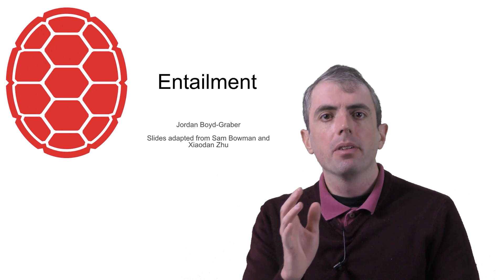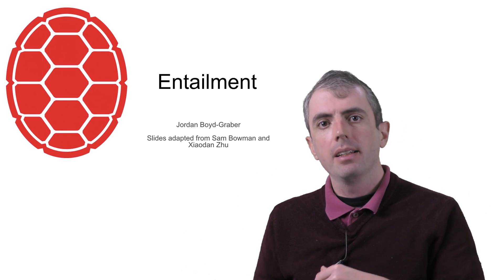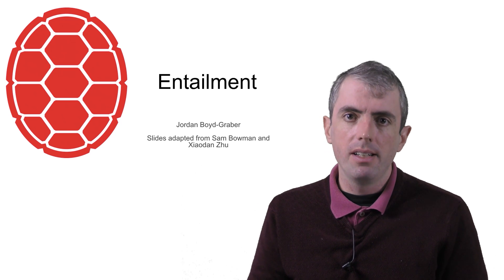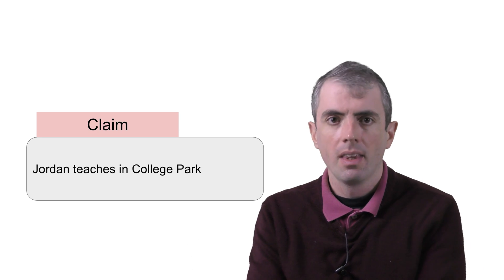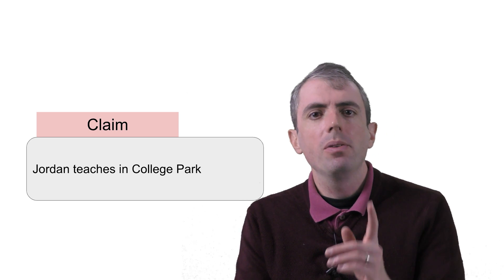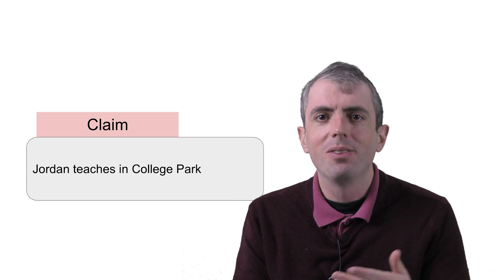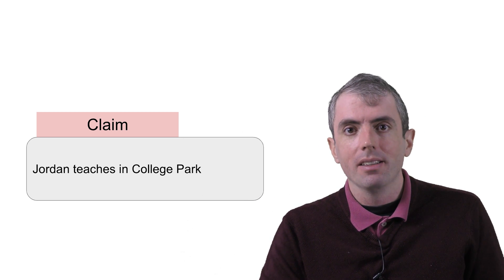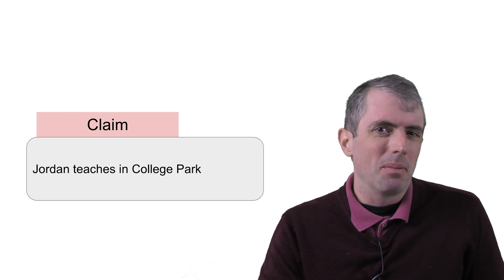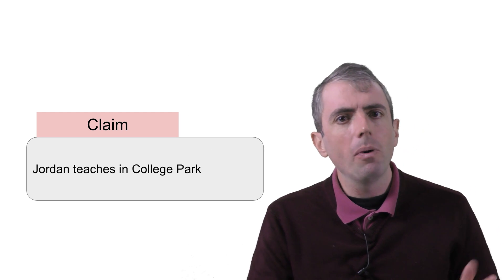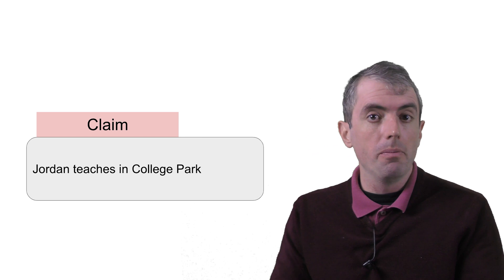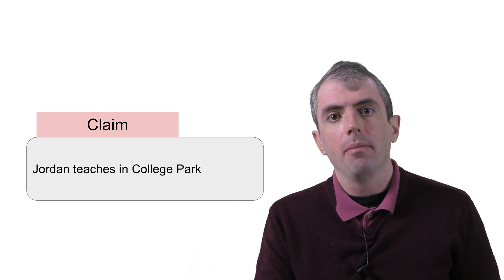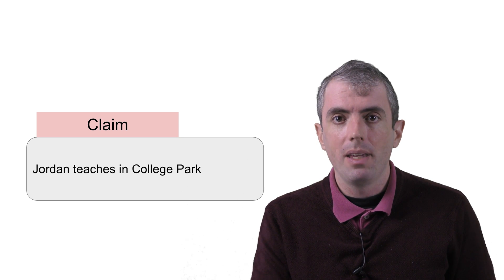Today we're going to talk about how a computer knows something is true or not. Let's say that you see the claim, Jordan teaches in College Park. If you don't know who I am, you have no idea who this Jordan fellow is, or if it's true that he teaches in College Park. So this is perhaps a little bit unfair. So when we ask computers to do this task, to see if something is true or not, we don't just give them the claim, we also give them a premise.